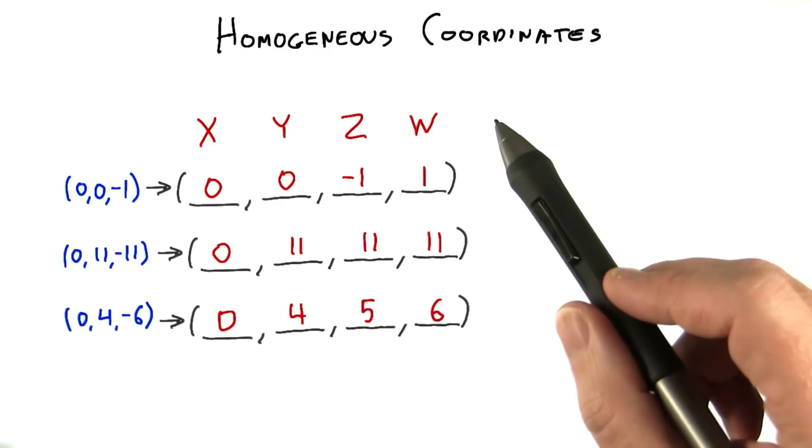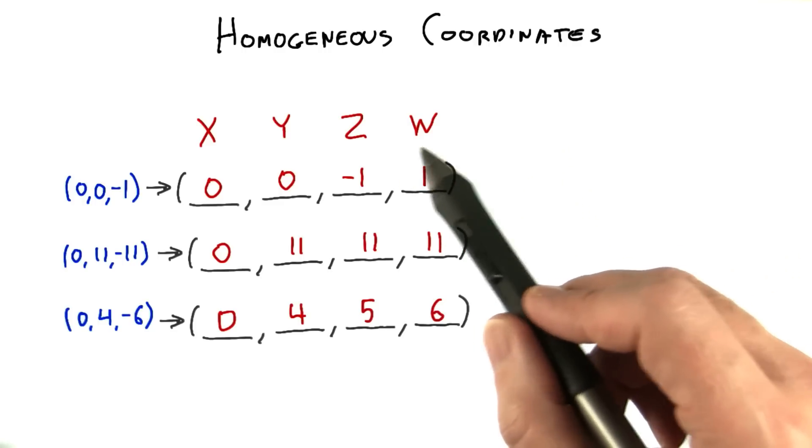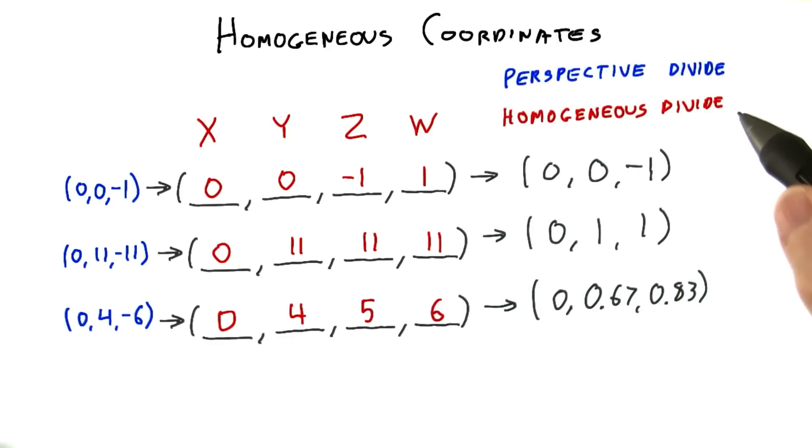What we do next with these coordinate values is divide each value by the w of the coordinate. This is called the perspective divide, or homogeneous divide.